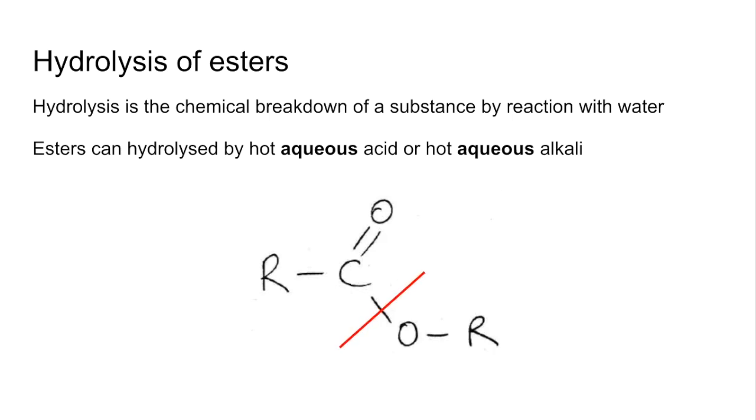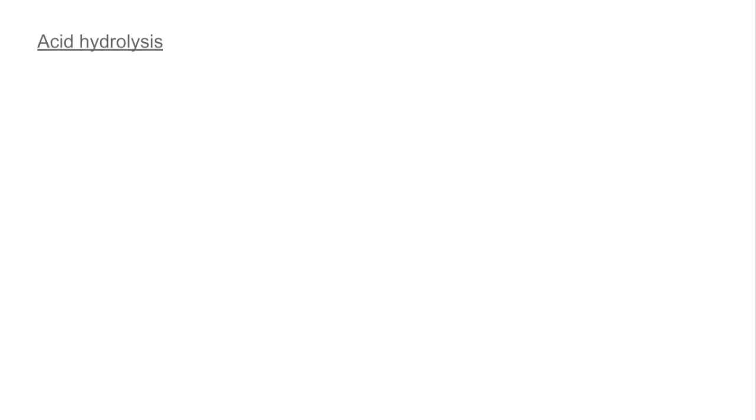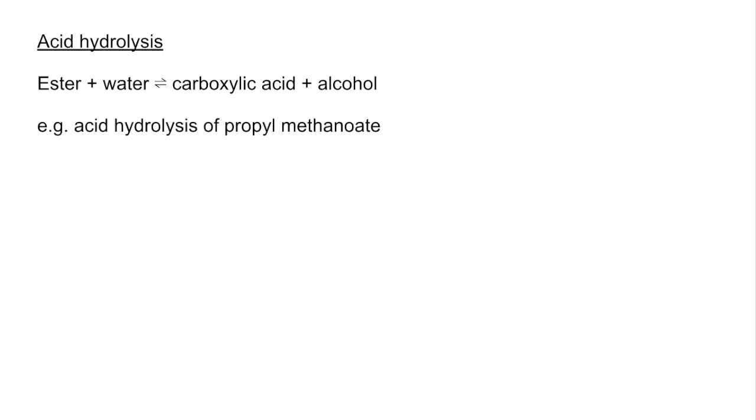So we'll start with acid hydrolysis. So it's basically the reverse of the carboxylic acid plus alcohol esterification reaction. So ester plus water makes carboxylic acid plus alcohol. For example, we'll look at the acid hydrolysis of propyl methanoate. So propyl methanoate is going to be hydrolyzed, acid hydrolyzed, to methanoic acid. That's the carboxylic acid that would have made this ester. And the alcohol would have been propan-1-ol. And if you notice, the acid doesn't feature in the equation. It's actually the water molecule.